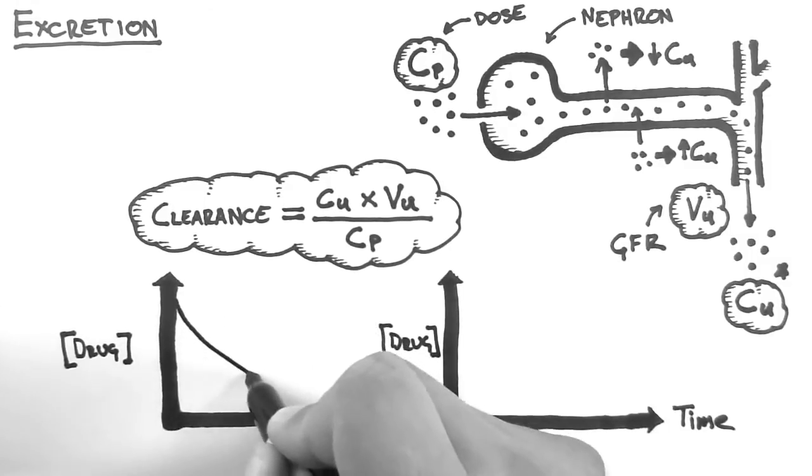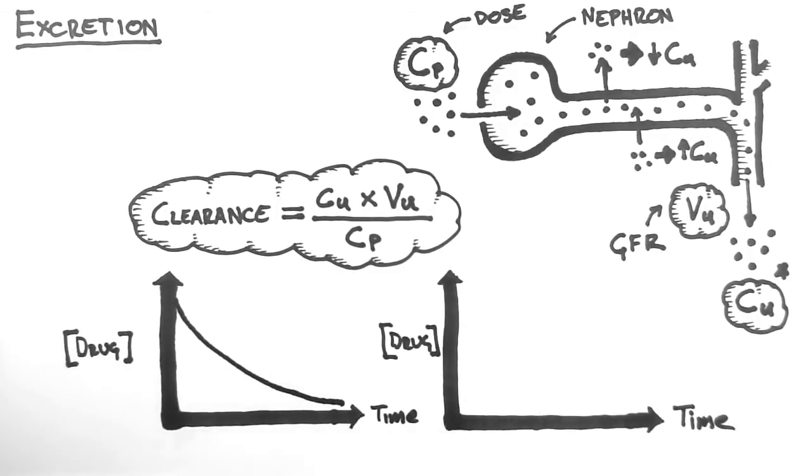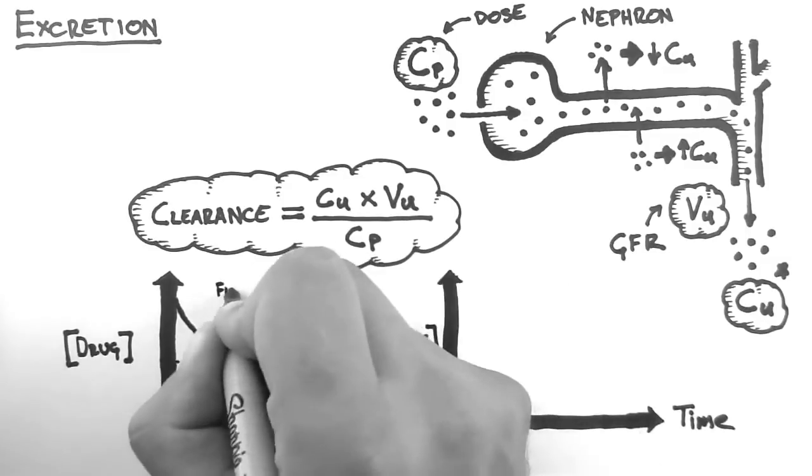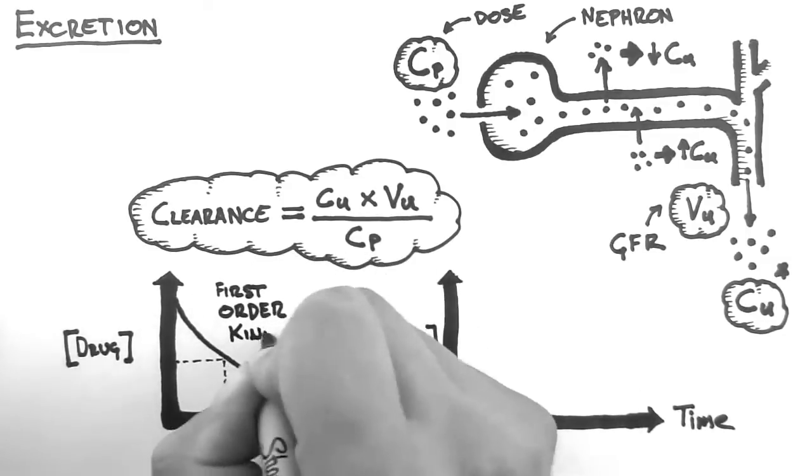This will give us a curve that looks like this. So the speed at which the drug is being eliminated slows down as the plasma concentration drops. Note however that the half-life is a constant. When a drug behaves like this, we call this first-order kinetics.